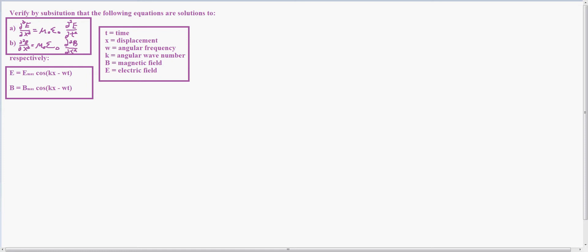Hello, this question states to verify by substitution that the equations are solutions to, and then I put a and b right here, which are the things I'm attempting to solve. That's the partial derivative squared E divided by dx squared equals mu naught epsilon naught d squared E divided by dt squared, and similar for B except replace the E with B, and B is the magnetic field.